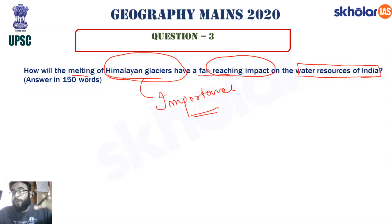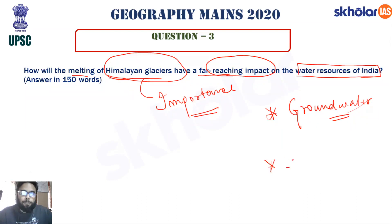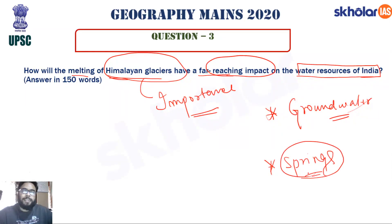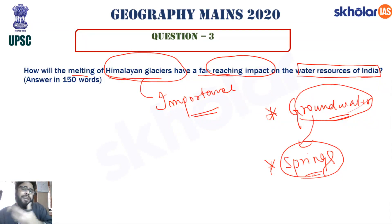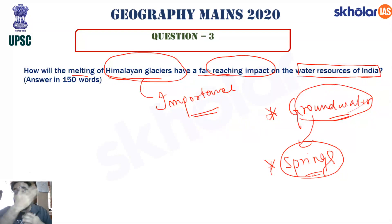The impact on rivers immediately comes to mind, since major Himalayan rivers — Indus, Ganga, and Brahmaputra — have their sources in the glacier region. Another aspect to write about is groundwater: in the Himalayan region, glaciers are the main source of groundwater recharge. Groundwater feeds springs, which are the main source of water for human settlements in the mid-hill regions. If glaciers melt, groundwater decreases, springs dry up, causing climatic migration and geopolitical tensions.